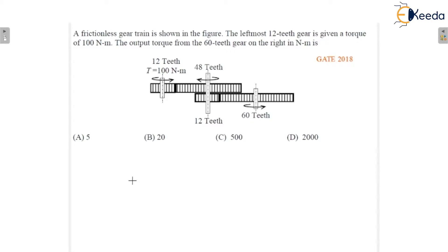So, we have to calculate output torque. Input torque is given and number of teeth are given for each gear. See here we all know that T_input × ω_input + T_output × ω_output = 0.